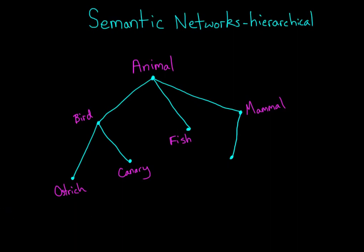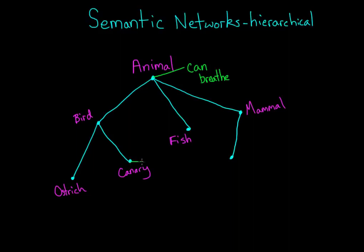Simple labels aren't the only type of knowledge that we store. We can store characteristics and properties of concepts at each node. According to the principle of cognitive economy — which just means that our brain is efficient — we store these properties at the highest possible node. So instead of storing 'can breathe' at each animal's node, we store that property just at the animal node. More specific characteristics, such as 'sings' or 'long legs,' would be stored at lower level nodes.